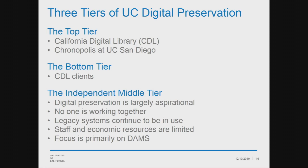At the other end of the spectrum are campuses that are consumers of services provided by the top tier. In the south, both Riverside and Irvine campuses fall into this category; in the north, the newest UC campus at Merced does as well. These schools receive the bulk of their digital preservation services directly from CDL, typically using CDL's DAM system and MERIT for digital preservation. What was really eye-opening for the committee were the findings regarding what the schools in the middle tier were doing — some of UC's largest campuses, including the flagship schools in Los Angeles and Berkeley. In our interviews, a number of common themes emerged: digital preservation is largely still aspirational, and no one is close to implementing certifiable practices.